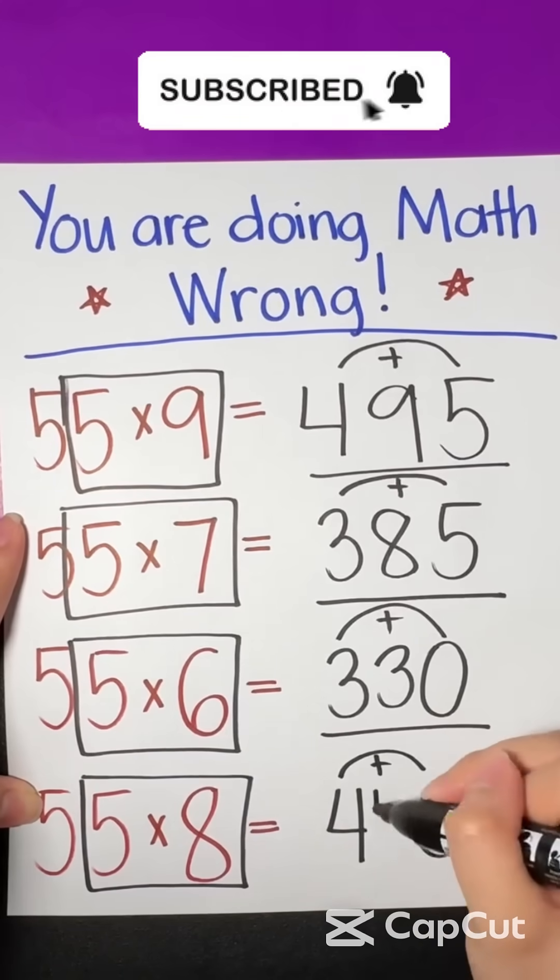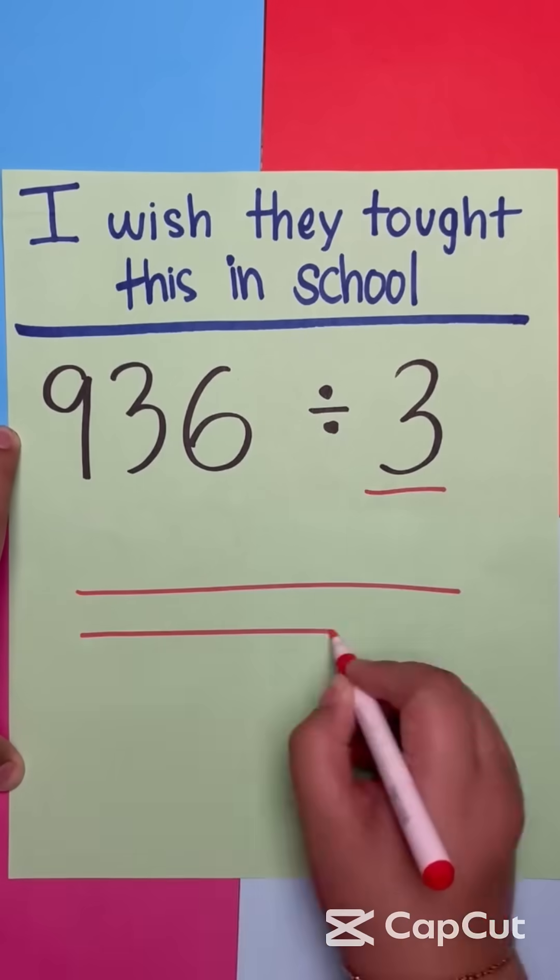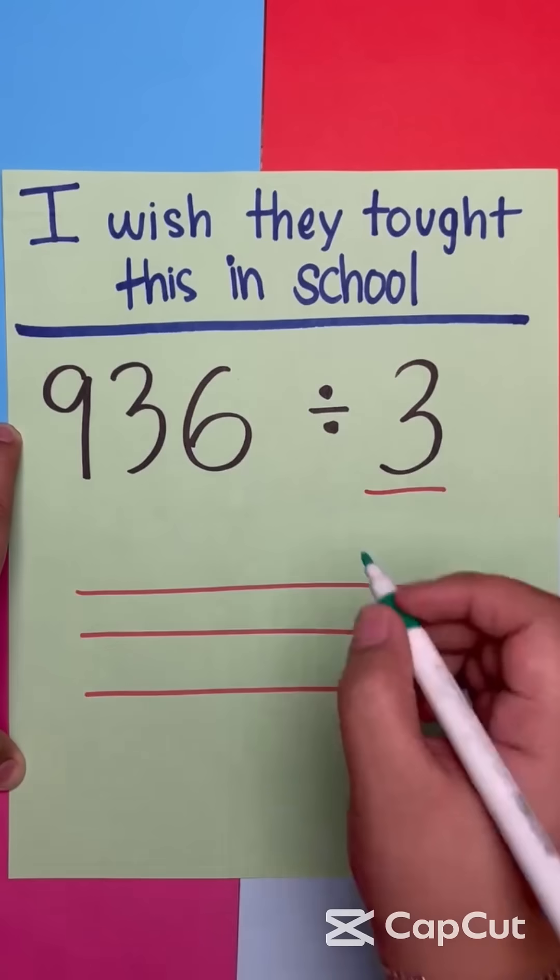Number one, why was the equal sign so humble? Because it knew it wasn't less than, or greater than, anyone else.